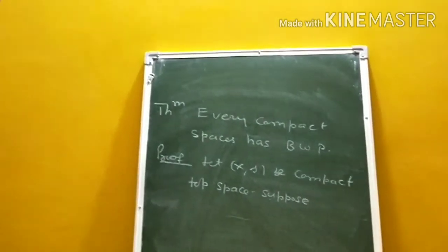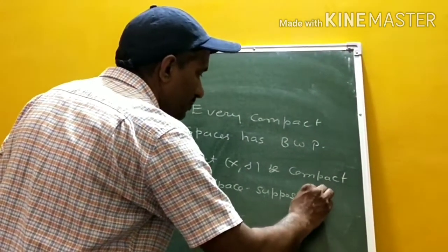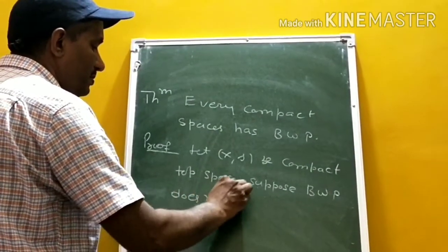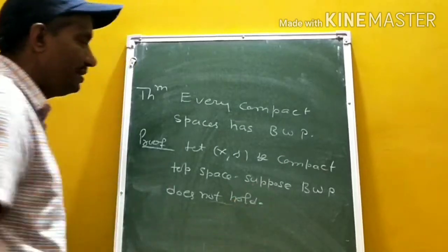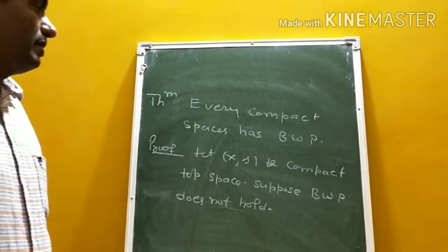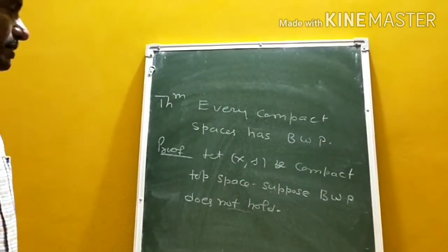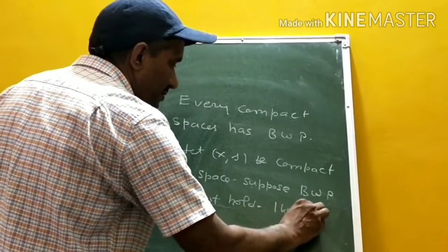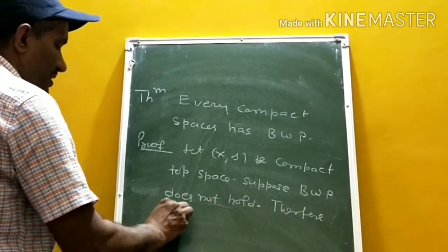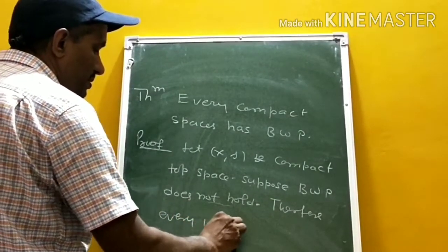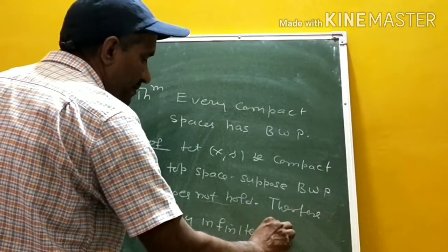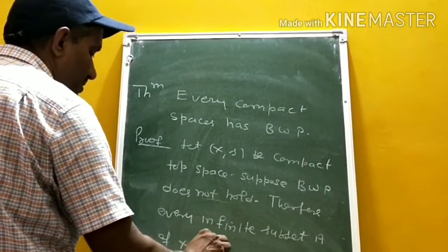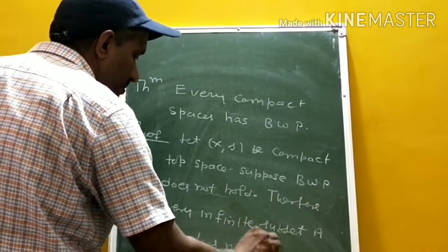Suppose Bolzano's property does not hold. This means every infinite subset A of X has no limit point.